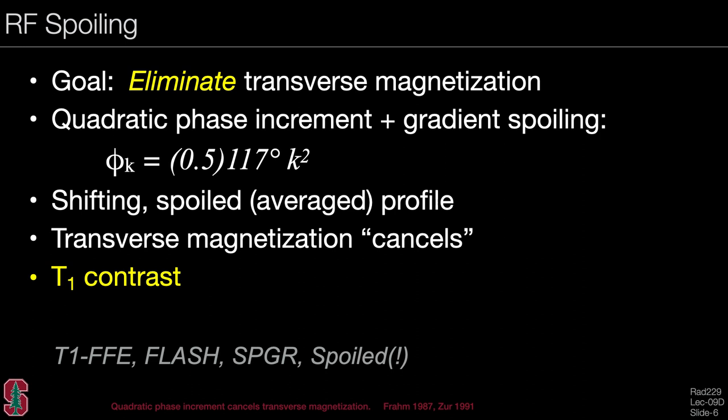These are some of the terms used for RF spoiling. Typically, if we see the term spoiled gradient echo or spoiled sequence, they usually mean RF spoiling as opposed to gradient spoiling. However, there is some ambiguity with this term.